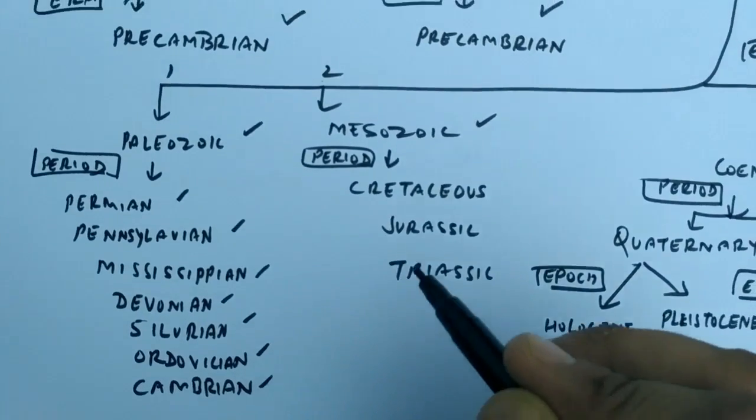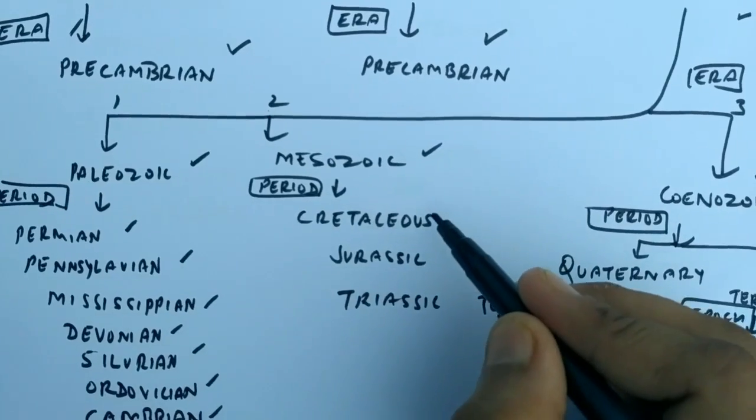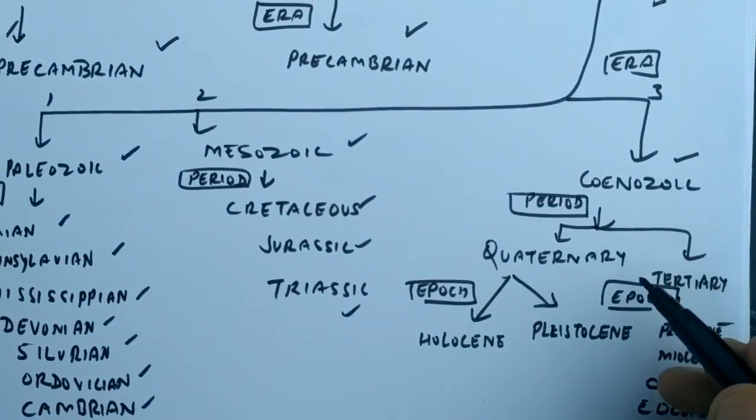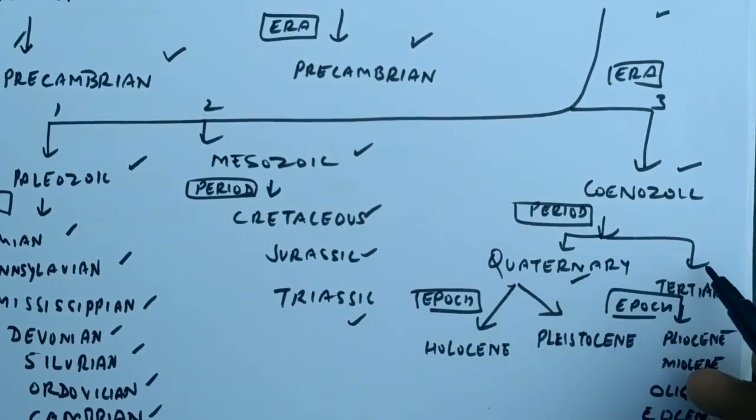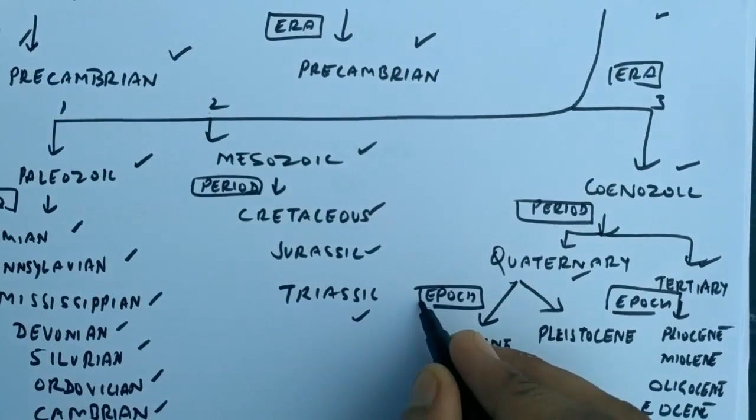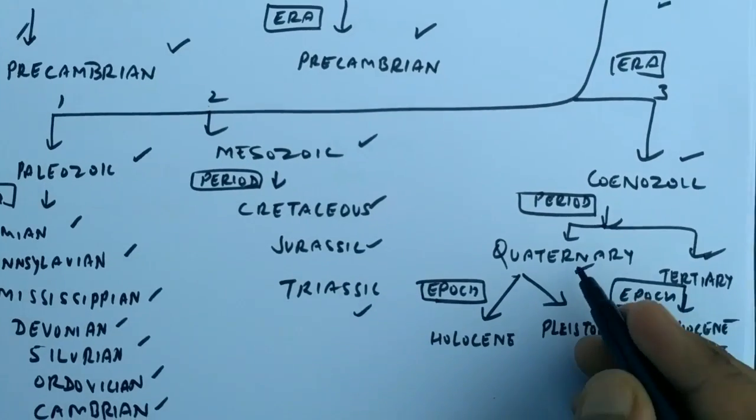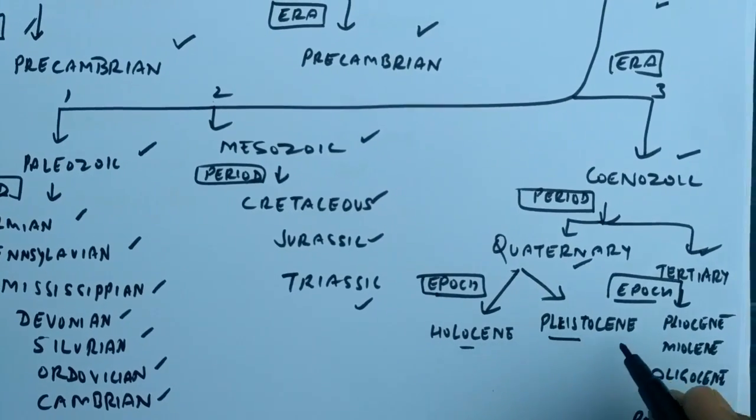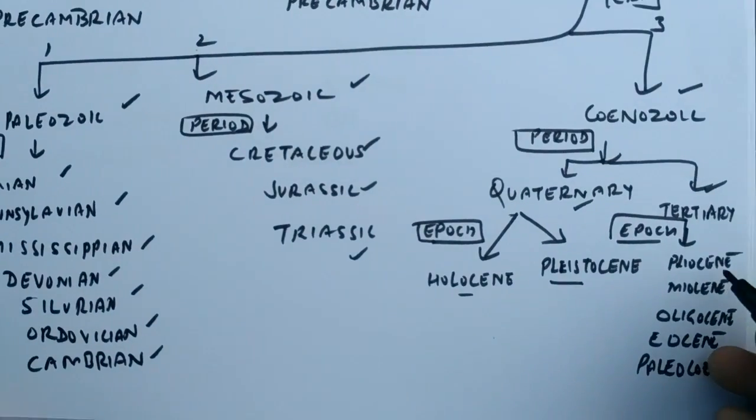In the Mesozoic era: Cretaceous, Jurassic, Triassic. In the Cenozoic era: Quaternary and Tertiary. After the period, the last unit is the epoch. In the Quaternary there are two epochs: Holocene and Pleistocene. In the Tertiary: Pliocene, Miocene, Oligocene, Eocene, and Paleocene.